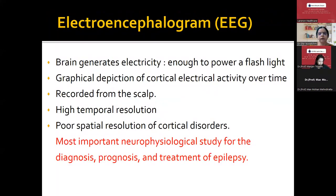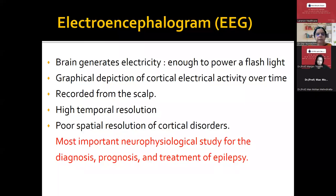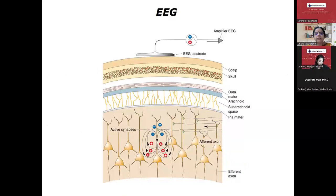How is the EEG generated? The brain generates electrical activity normally, which is enough to power a flashlight. EEG is nothing but the graphical description of the cortical electrical activity over time — a dynamic process we are recording from the surface of the scalp. There is high temporal resolution with EEG but poor spatial resolution of cortical disorders — meaning we cannot record from depths like the hippocampus or cingulate gyrus. However, EEG is a very important neurophysiological study for the diagnosis, prognosis, and treatment of epilepsy.